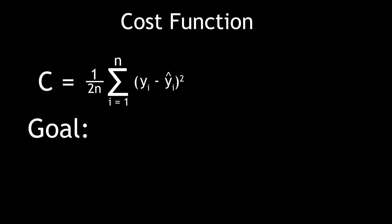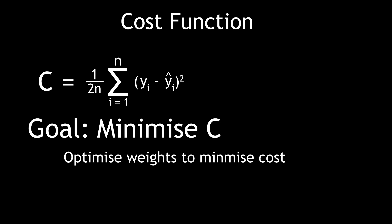The obvious goal here is to get the network to minimize the total cost. This is done by adjusting the weights so that they're optimal for minimizing the cost function. But to adjust the weights, we need to calculate something called the gradient of the cost function. And this is where backpropagation comes in.